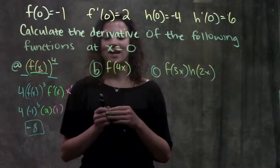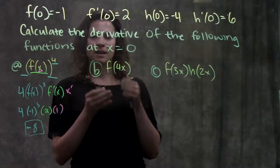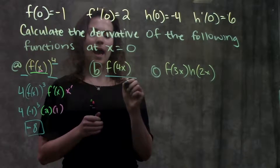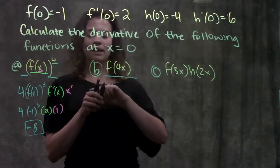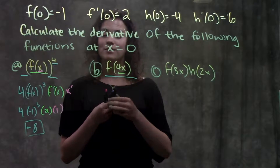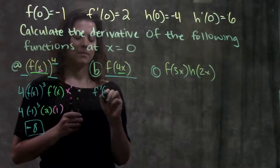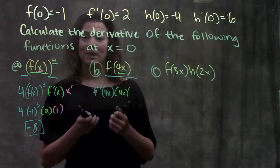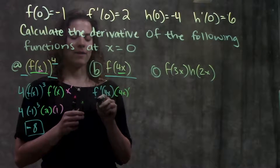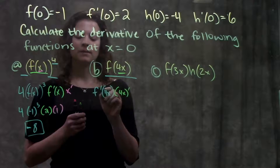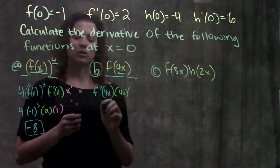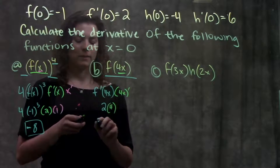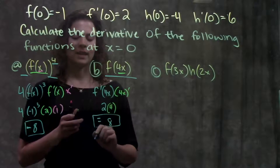Moving on to part B, I'm going to use the same strategy: identify the outside function, identify the inside function, then plug in all my values. Part B gives me f of 4x. My outside function is just f of whatever the inside part is, and my inside function is just 4x. Using chain rule, the derivative becomes f prime of 4x times the derivative of 4x. Plugging in 0 for x, this becomes f prime of 0, which is 2, times the derivative of 4x, which is just 4. And 2 times 4 gives me positive 8 — that's the answer for part B.